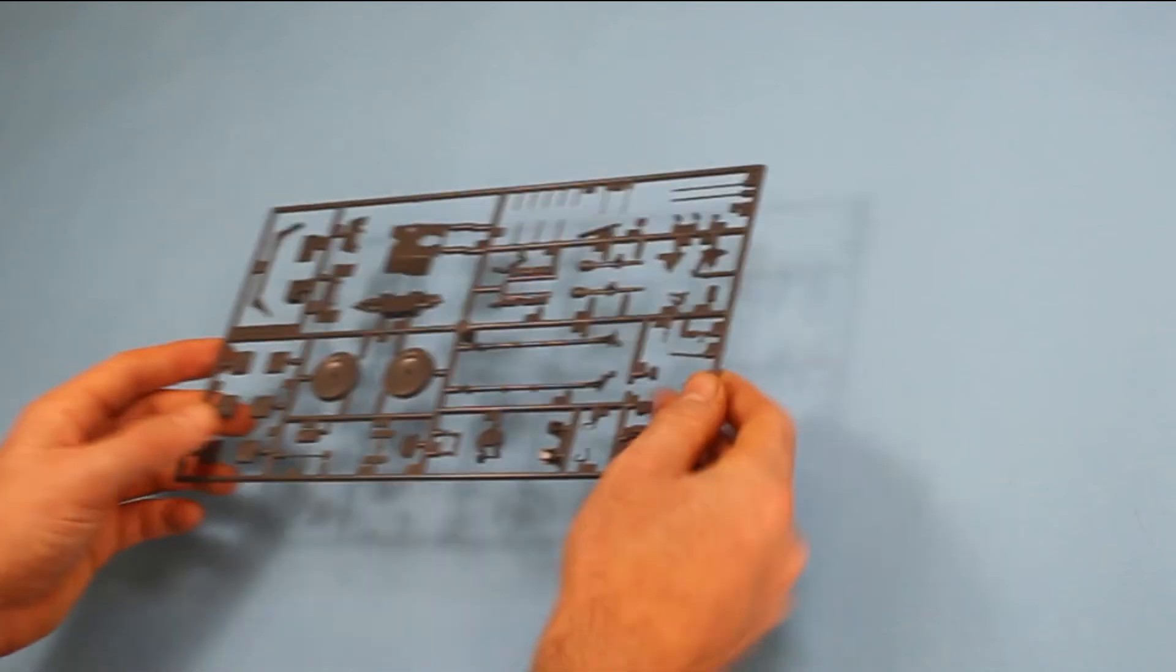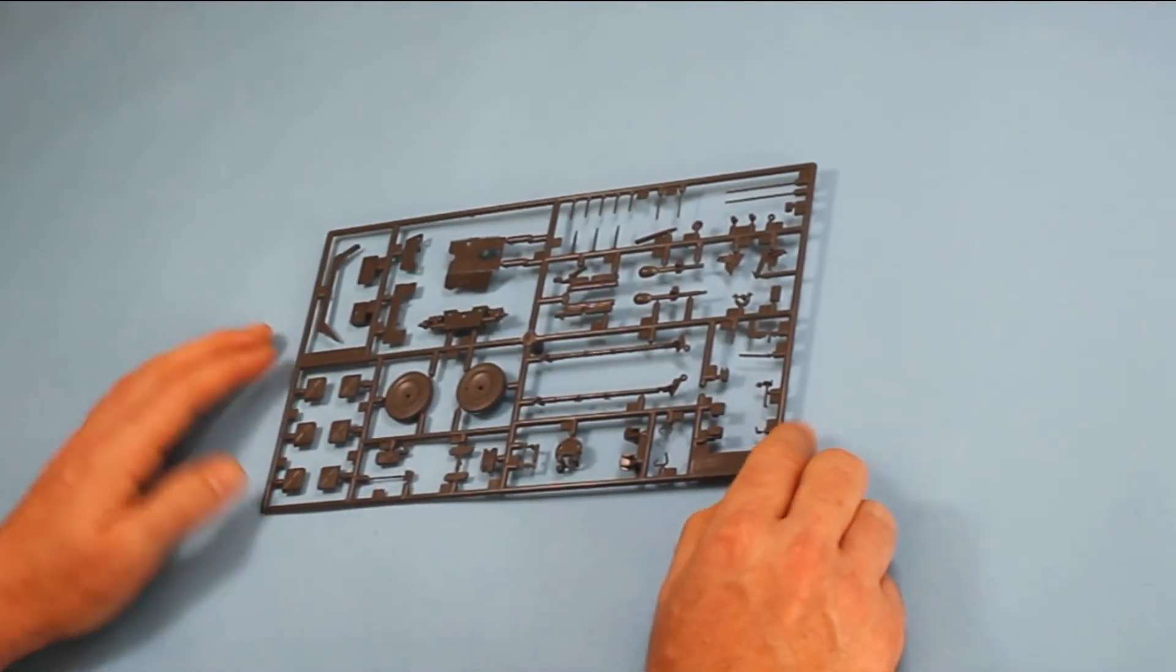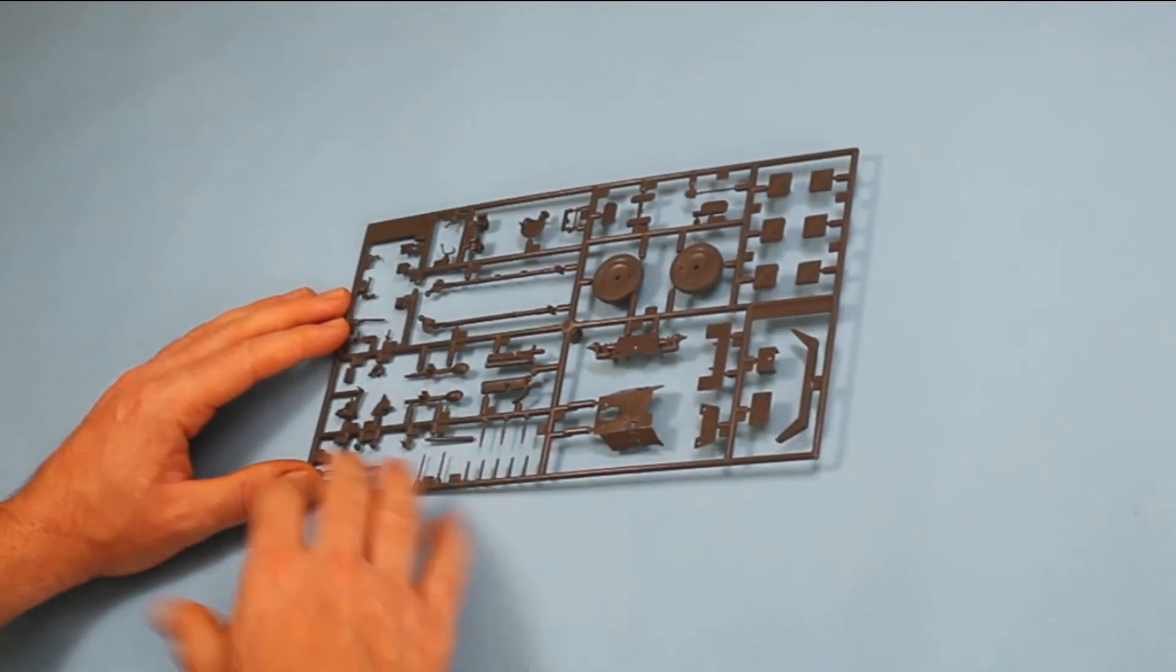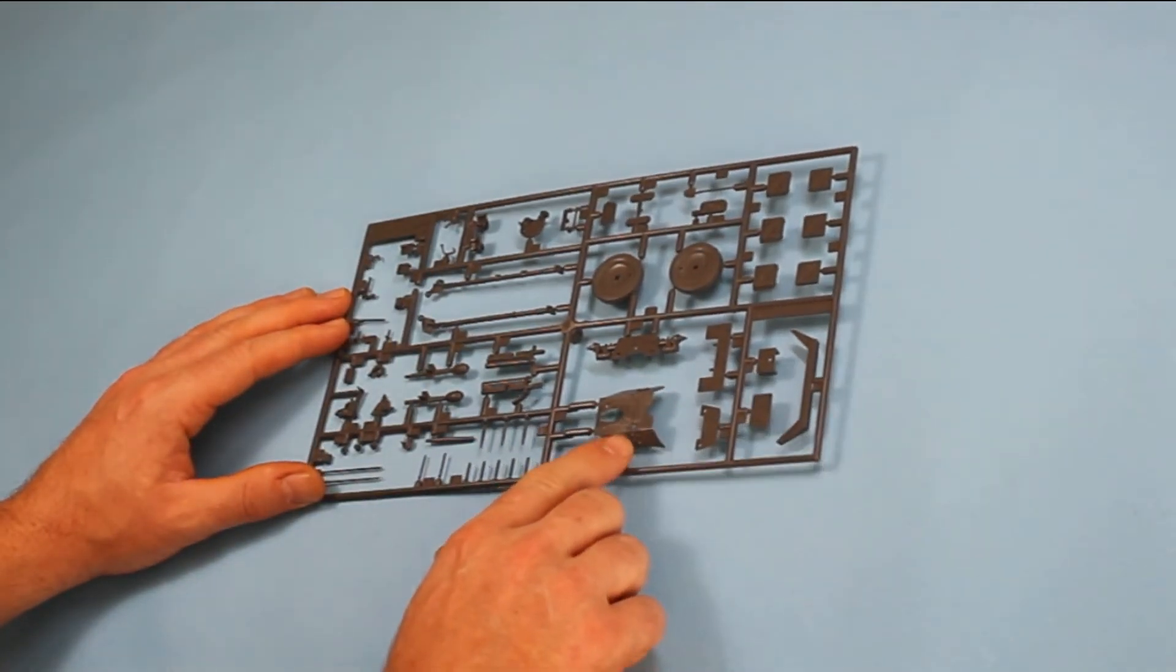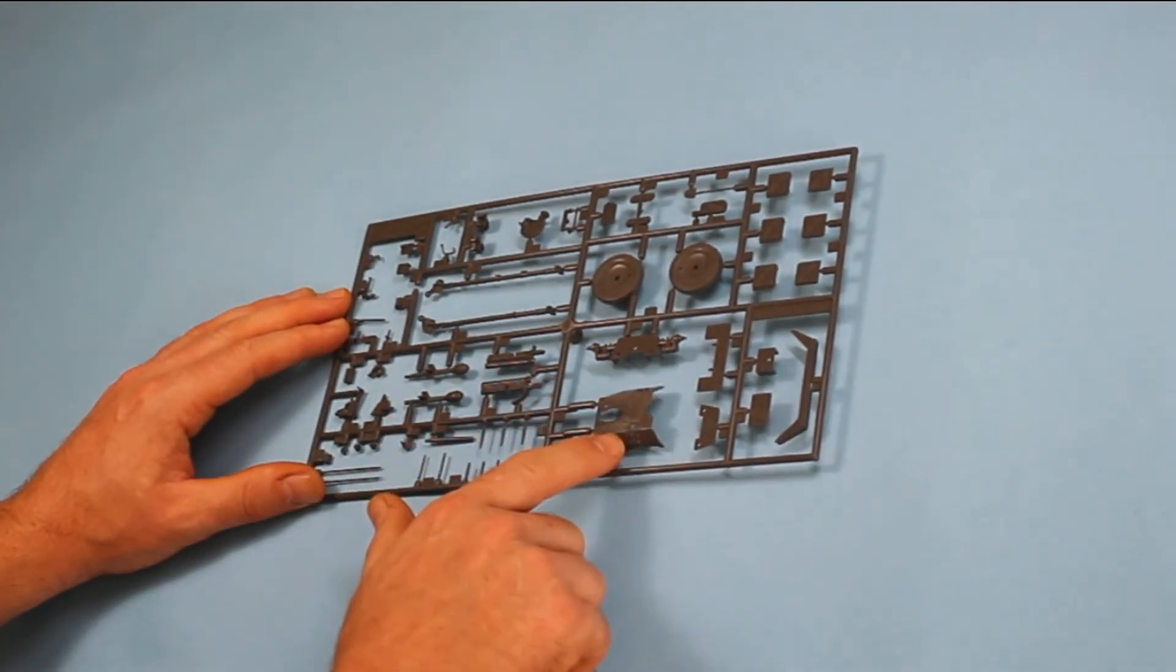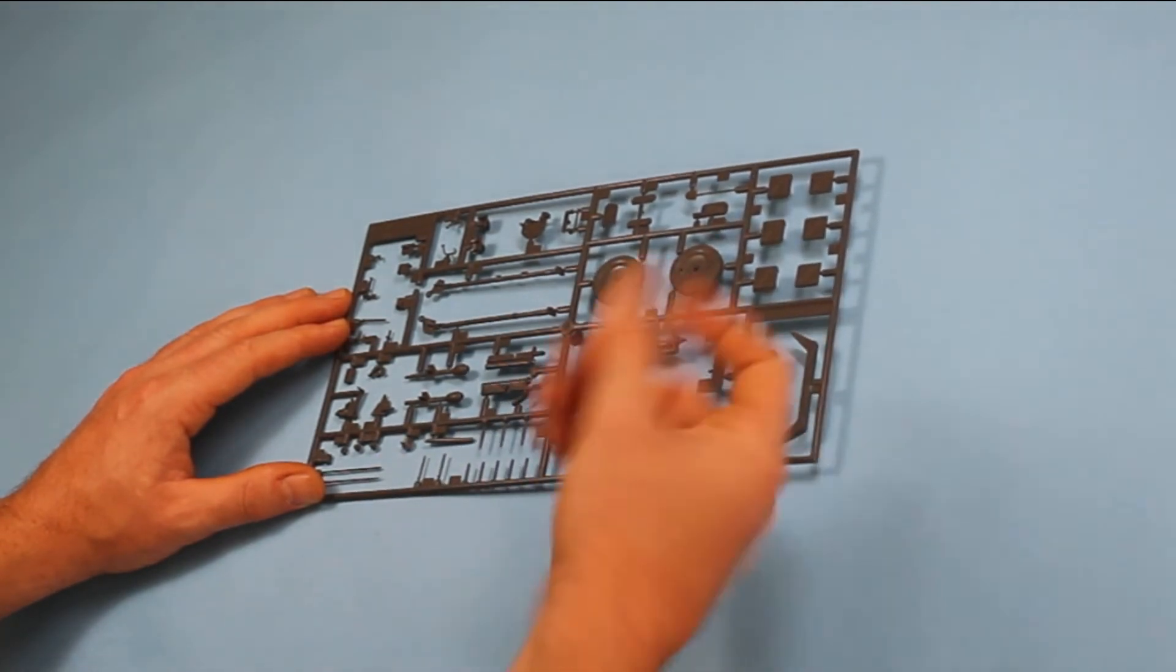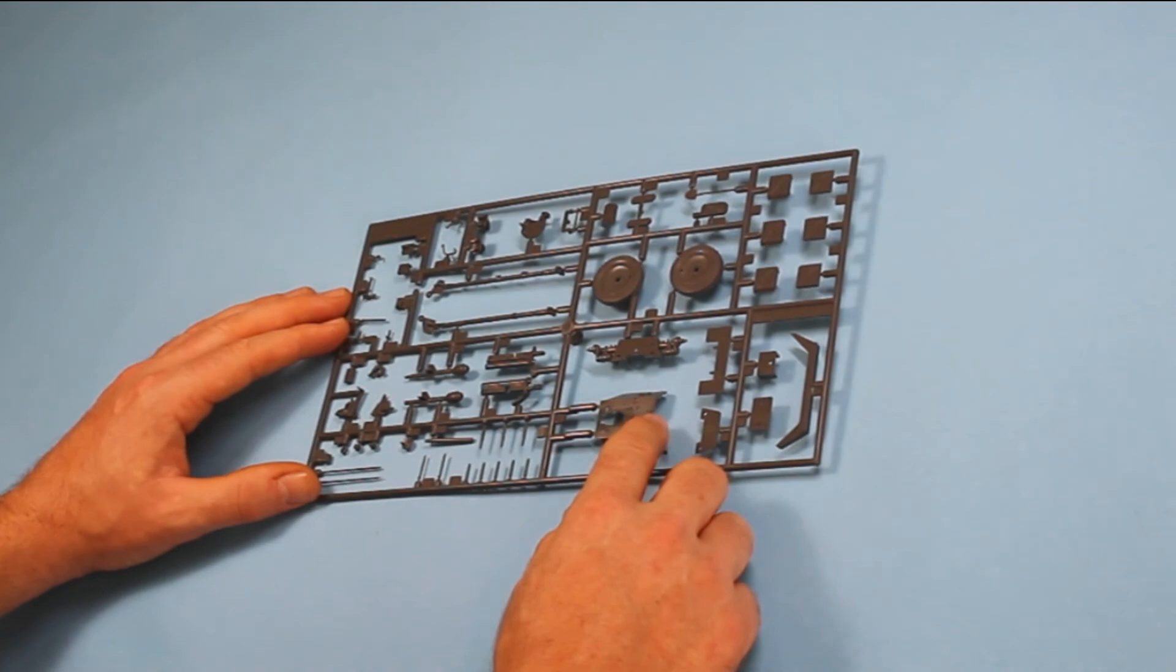And then we've got one sprue which contains the gun. Everything's on here and it's very nice. There's good rivet detail and hinges here on the gun shield. Obviously it's a little bit thicker than if you were to have a photo etch or a modern version of it.